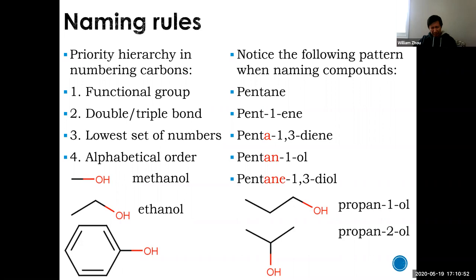Benzene with an alcohol group is called phenol — not benzene-ol. When benzene becomes a group with one alcohol, the naming rule gives us phenol. Now, notice the naming pattern: pentane as the naked alkane, pent-1-ene for a double bond, pent-1,3-diene for two double bonds.